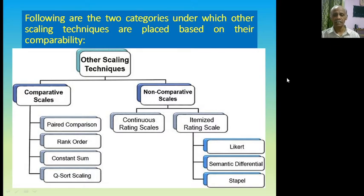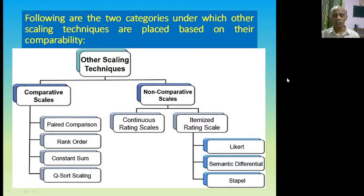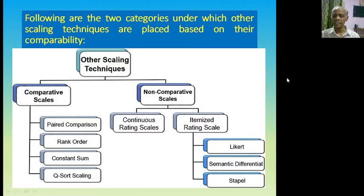The other scaling techniques, as you have been observing in this slide, can be classified under two categories: comparative scales and non-comparative scales. The comparative scales can be further divided into four categories: paired comparison, rank order, constant sum, and Q-Sort scale. On the other hand, the non-comparative scales can be classified under two heads: continuous rating scales and itemized rating scales. The itemized rating scales will be categorized under Likert scale, semantic differential scale, and staple scale.